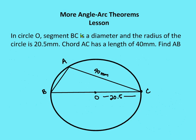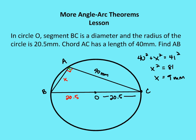The last problem: in circle O, segment BC is a diameter and the radius is 20.5 millimeters. Chord AC has a length of 40 millimeters. Find AB. Since BC is a diameter, the inscribed angle BAC corresponds to a semicircle, so angle BAC equals 90 degrees — because arc BXC is 180 degrees and the inscribed angle is half that. So I have a right angle and can use the Pythagorean theorem.